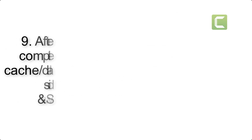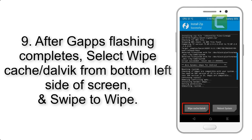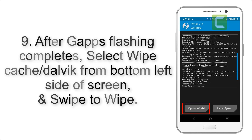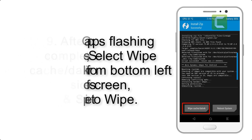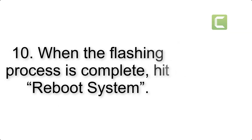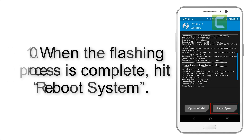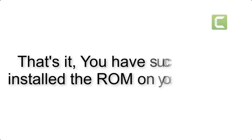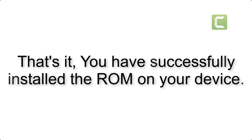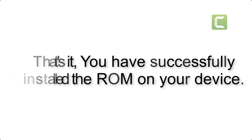Step 9: After GApps flashing completes, select wipe cache and Dalvik from the bottom left side of the screen and swipe to wipe. Step 10: When the flashing process is complete, hit reboot system. That's it — you have successfully installed the ROM on your device.